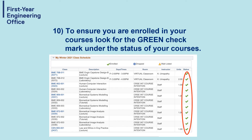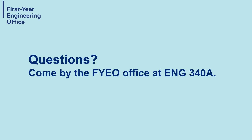Step ten: to ensure you have enrolled in your courses, look for the green check mark under the status of your courses. And that's it, you're done your course intentions. If you'd like any more assistance, you can always drop by FYEO's office located at Edge 340A.